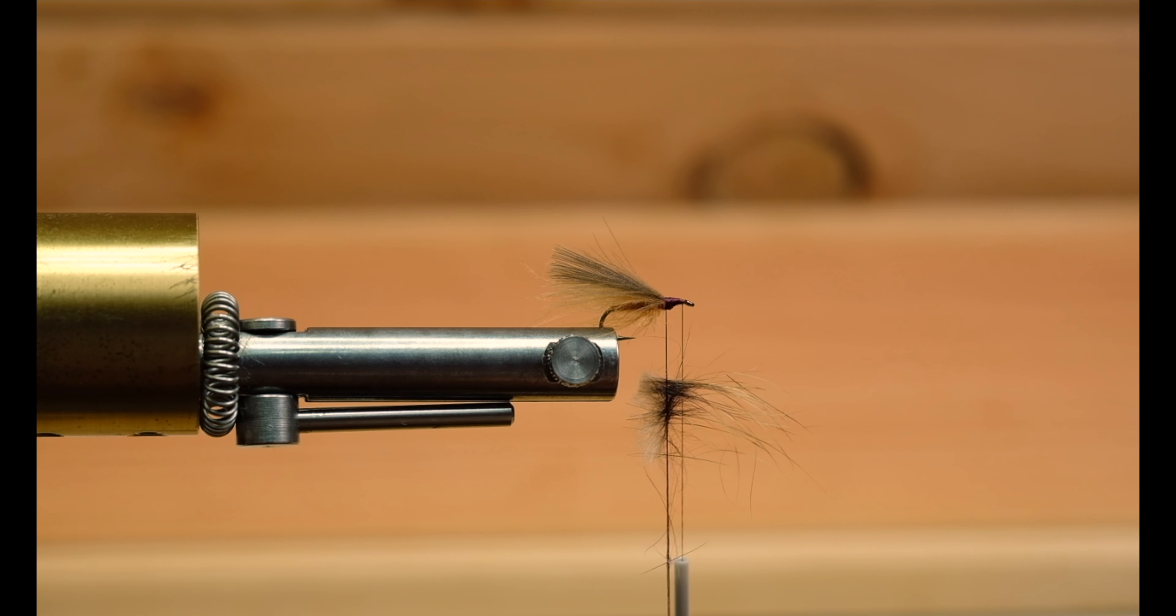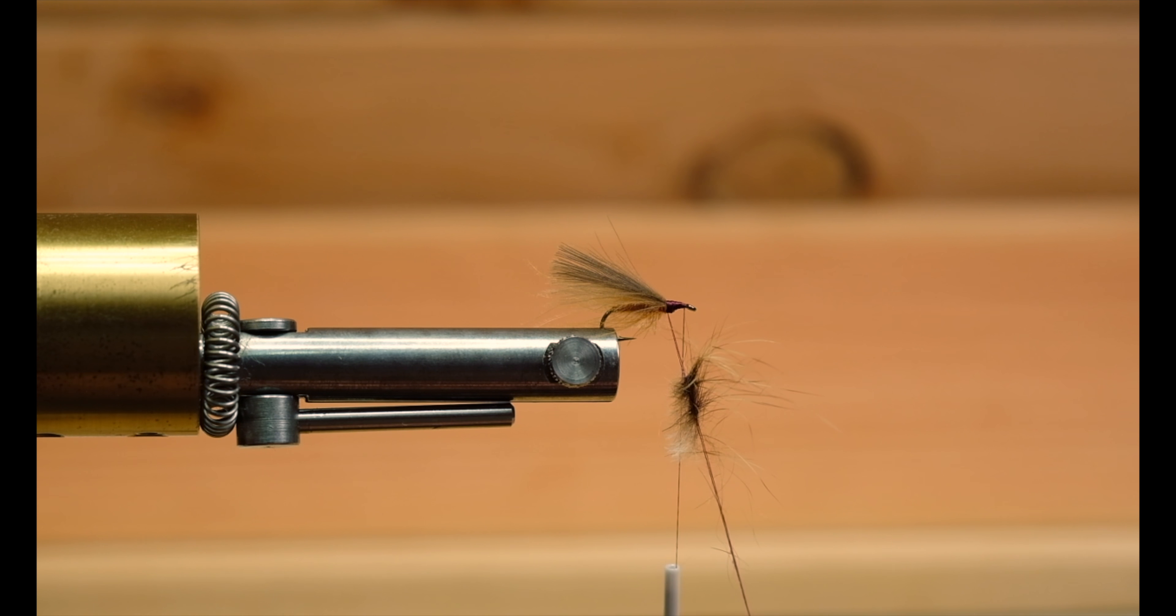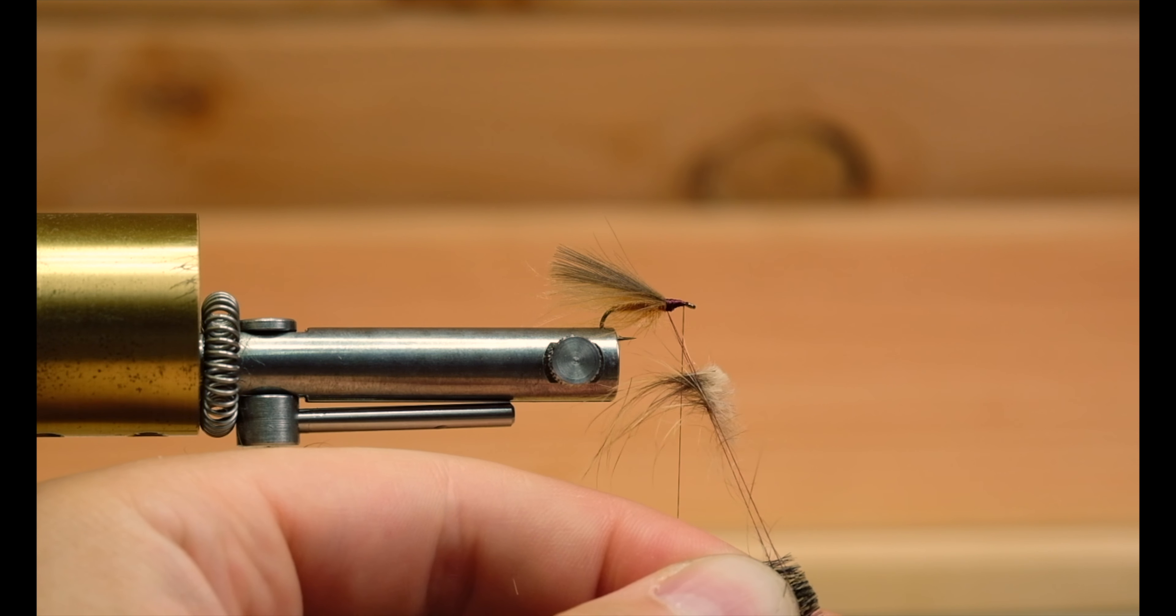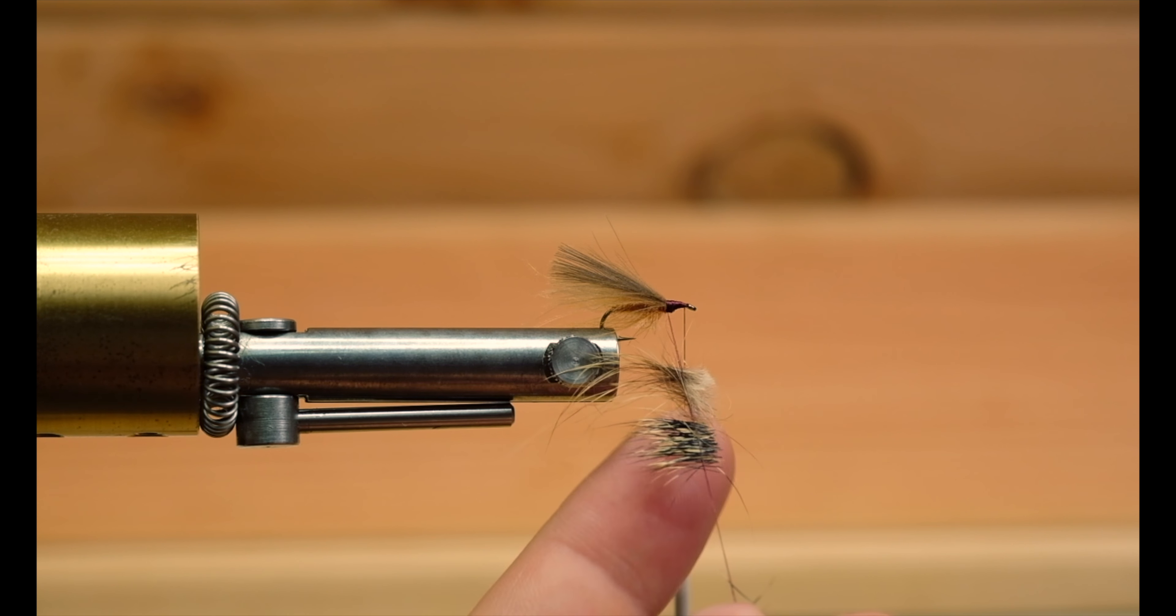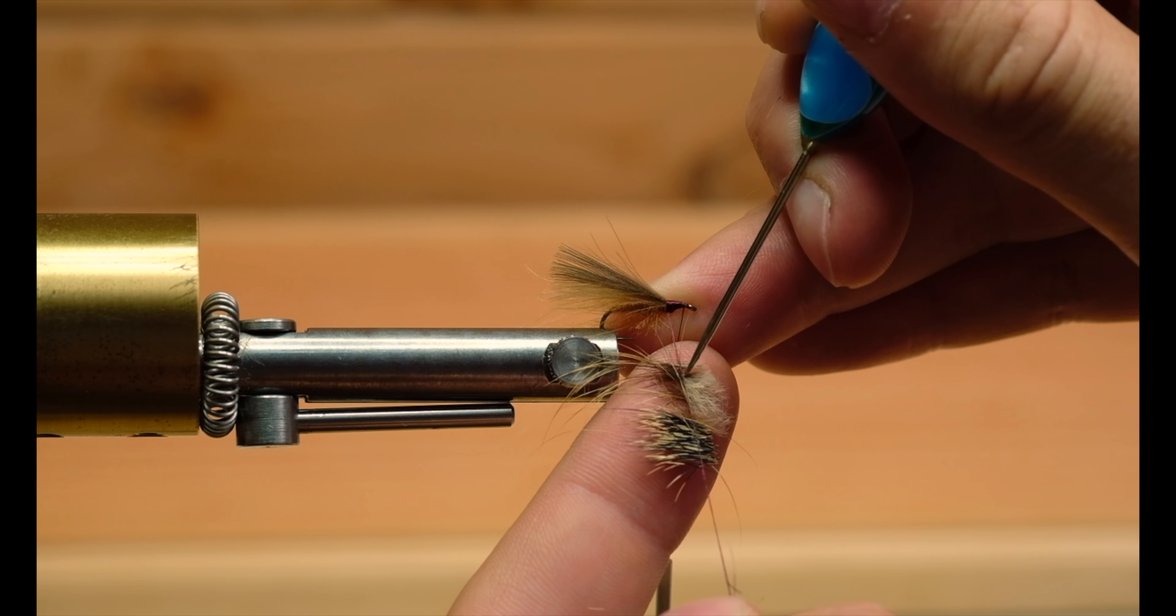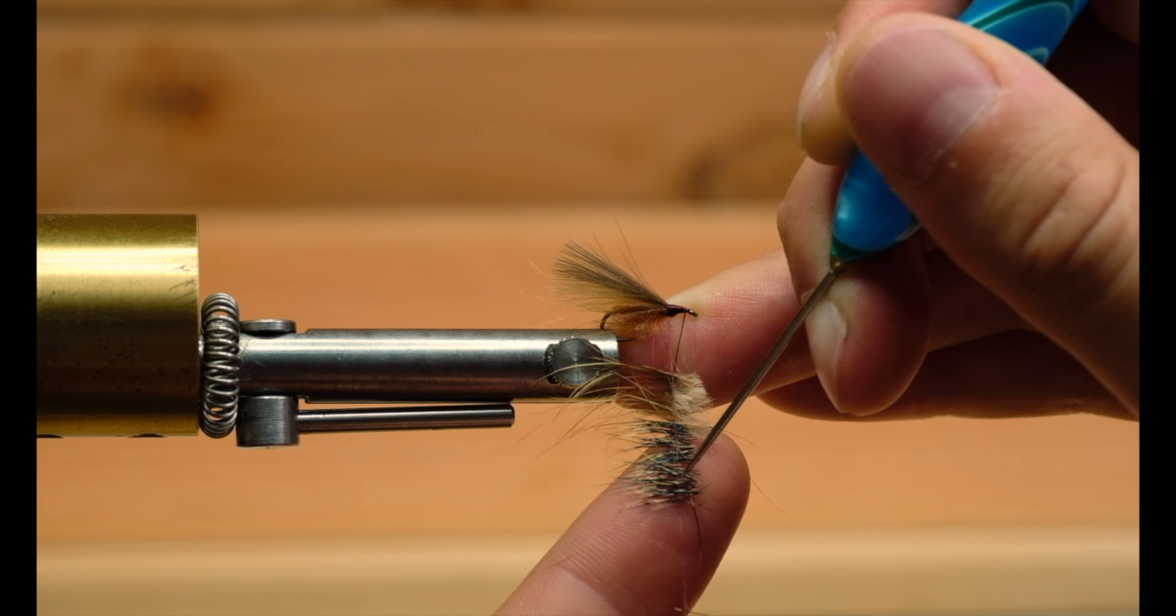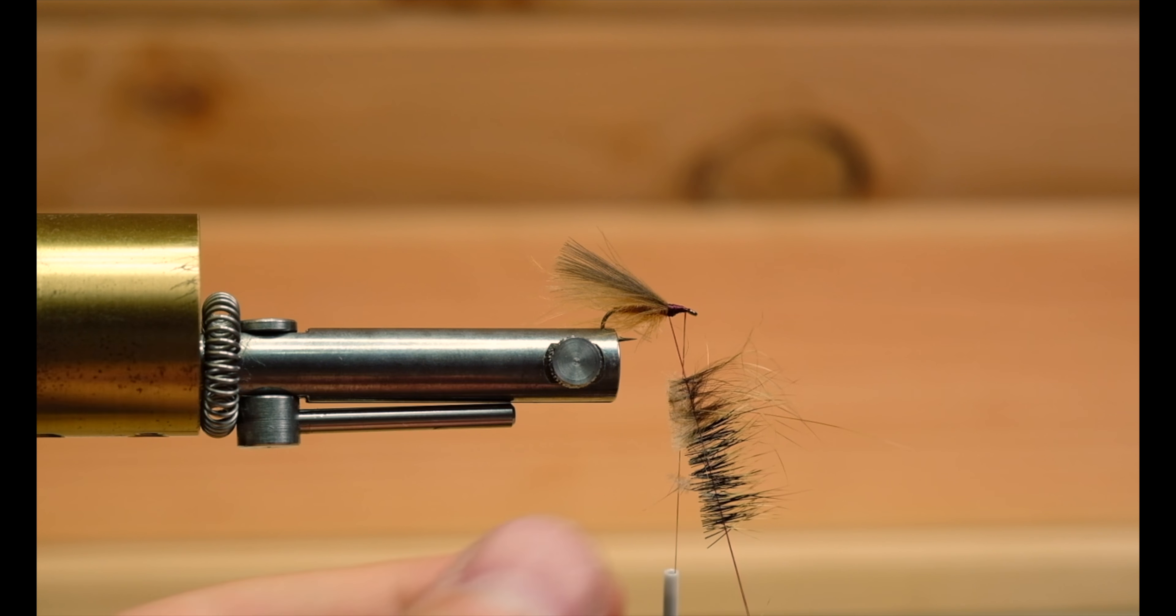For the thorax I'll be using squirrel. Again, I'll just pull some hairs from the pelt, cut them so they're straight. Open up my loop again. This is where the dubbing wax comes in - the hairs won't fall out because of the wax. I have to spread this out just a little bit. Give it a spin.